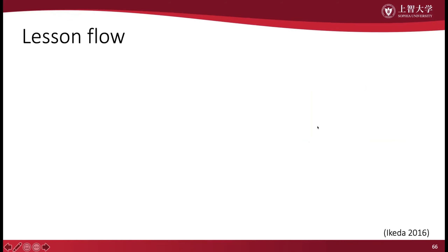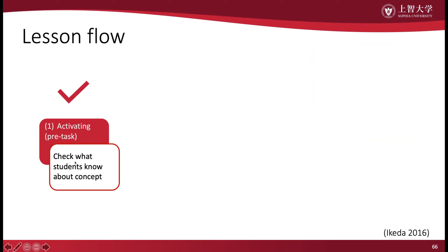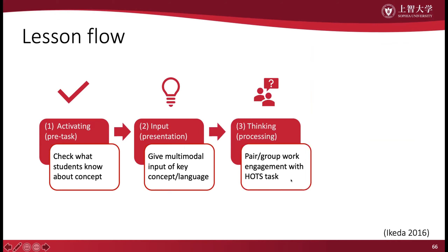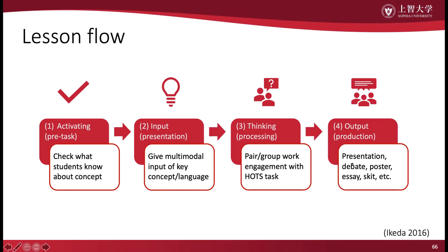In terms of lesson flow, generally we should follow a four-P process for each new concept. The first P is the pre-task, where we activate the student's prior knowledge of the concept. Next is presentation, where we give students input about the concept and the language related to it. Third, we have process or thinking — this is where students engage in the task in pair or group work. And finally, production: students produce something concrete that demonstrates their understanding of the concept. This may not always happen in a linear fashion, and there may be a group of concepts rather than just a single concept, but generally this is the pattern our lessons should follow.